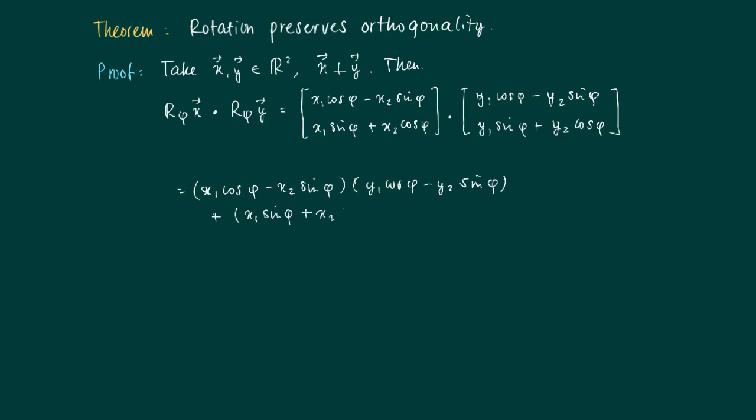We do the multiplication of the first coordinates with each other. And now we add the second coordinates multiplied: (x1 sin phi + x2 cos phi) times (y1 sin phi + y2 cos phi), which is the expression over here.